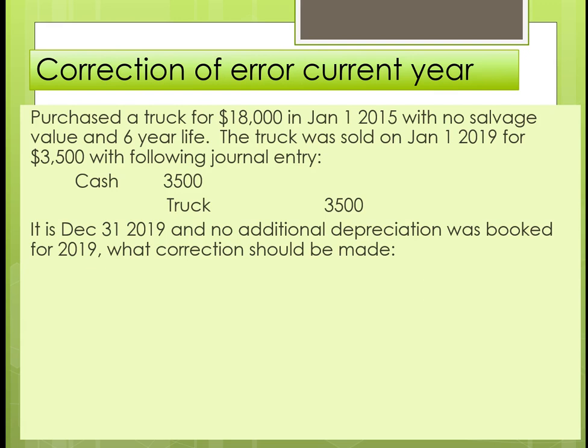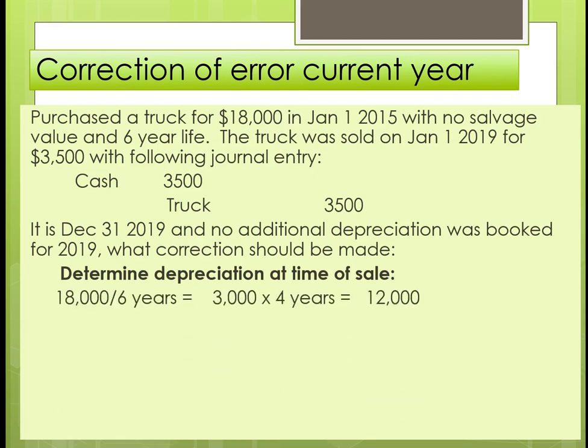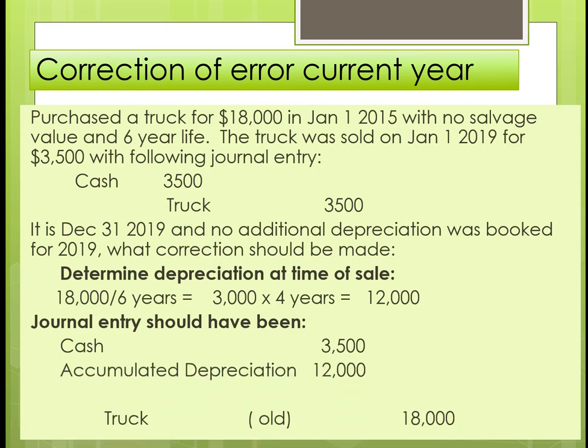Here's an example where the error happened in the current year. A truck was purchased for $18,000 on January 1, 2015 with no salvage value, then sold on January 1 for $3,500, but the journal entry made only recorded cash and truck. That's not right — you have to take accumulated depreciation off the books and remove the truck at its original cost. What the entry should have looked like: first calculate depreciation to that point, then book the cash, remove the old equipment from the books, and record the loss on sale.